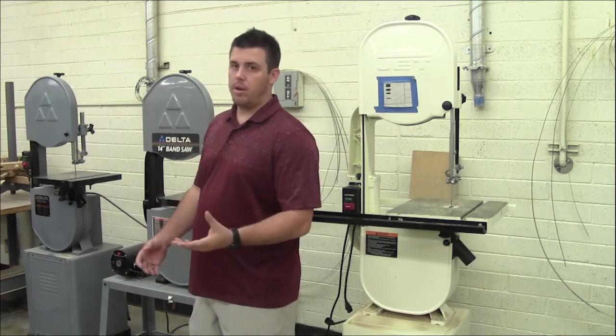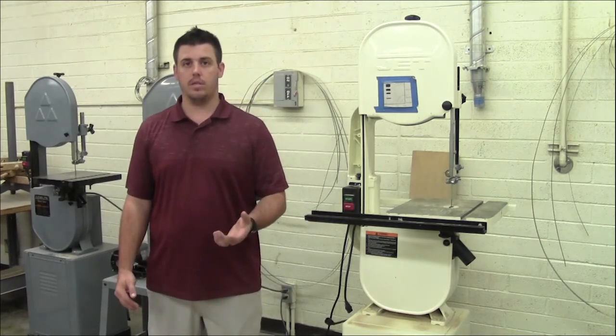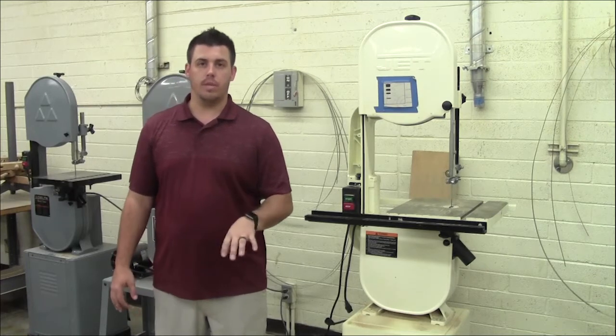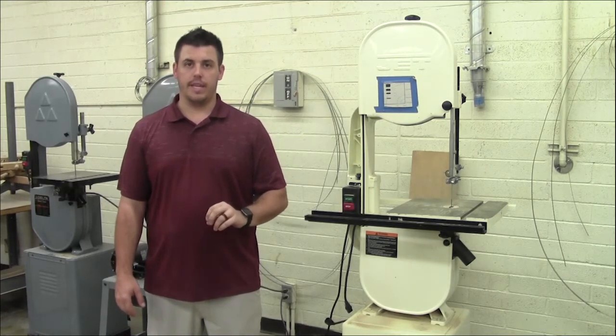The smaller the blade, the more curves you can do or the tighter curves that you can make. So if you're trying to cut out a circle or cut out a shape, you want the smaller blades to do more of the hard turns and curves like that.